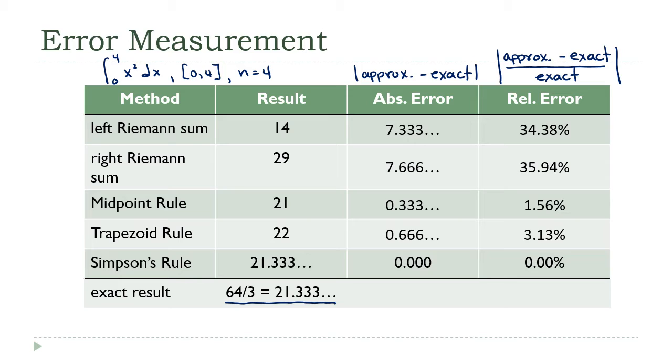And what I did in the other two columns is I just calculated these two different errors, right? The absolute error, I'm looking at the left Riemann sum. This would have been just 14 minus 21.333. And you get this number here. And if we divide that by 21.333, you get that relative error. Don't forget absolute value, which is why that number is positive. Pretty straightforward. So what we want to be able to do now is we want to be able to say what the maximum possible error is for each of these three new methods here that we were talking about in this section.